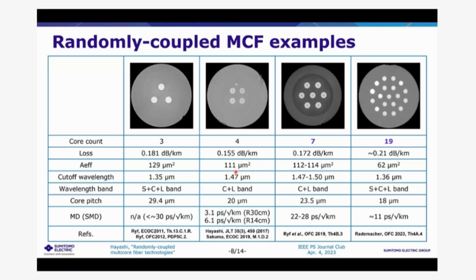The non-linearity of the multi-core fiber is very suppressed in the transmission. And with the four core fiber published result, the transmission loss is 0.155 dB per kilometer at 1550. And further lower loss is possible. There is no fundamental limit. And in the very recent result of the OFC 2023 post-deadline paper, the randomly coupled 19 core fiber was presented. And with this 19 core fiber, 1.7 petabit per second per fiber transmission was demonstrated.